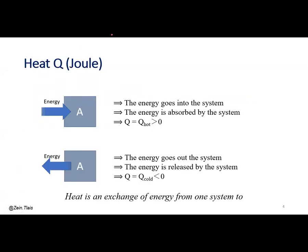Let's define first of all the heat. The notation of heat is Q, with the unit in joules. In general, heat is an exchange of energy from one system to another. Let's take a medium A — it can be solid, liquid, or gas — and if we give a quantity of energy to the system, we have an exchange of energy between the external medium and the medium A.